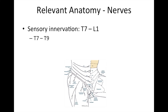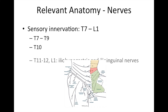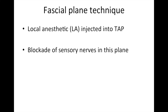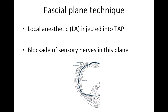T7 to T9 supplies the skin above the umbilicus. T10 supplies the umbilicus, whereas T11, T12, the iliohypogastric, and ilioinguinal nerves supply the skin below the umbilicus. TAP block is a fascial plane technique where a large amount of local anesthetic agent is injected into the transversus abdominis plane to achieve sensory blockade of mid-lower thoracic and upper lumbar nerves.